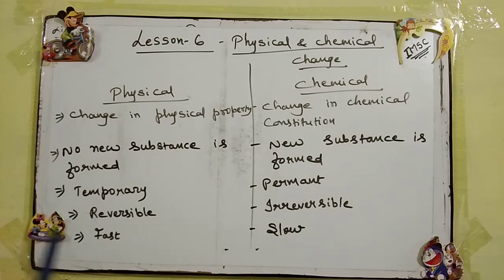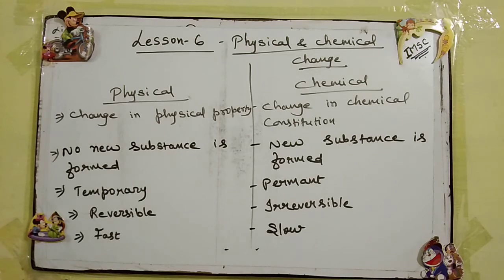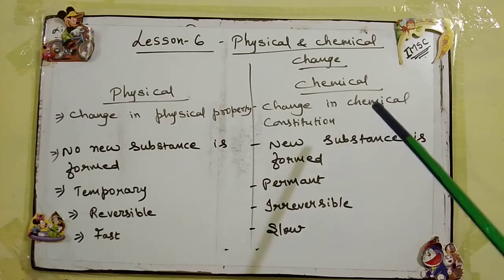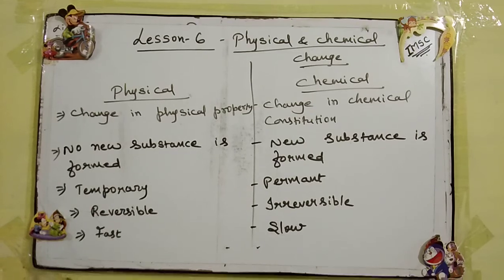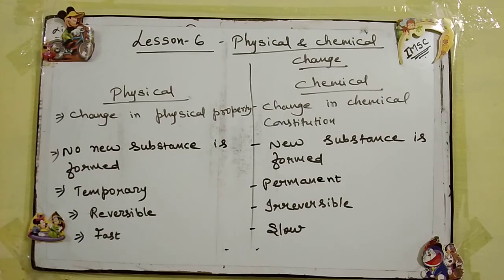Physical change is temporary — temporary means it is for short duration, कम time के लिए रहता है. जबकि जो chemical change है, it is permanent. Physical change is also reversible.